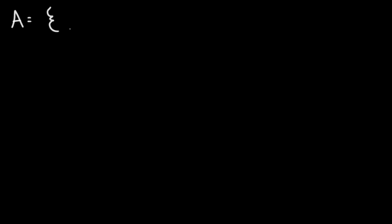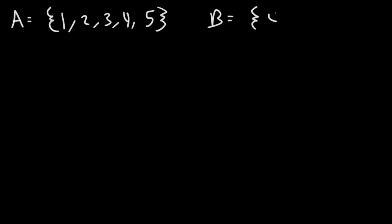Now let's use a simple example that will illustrate the use of Bayes' Theorem. Let's say that in a bottle there's a bunch of pieces of paper with numbers on it. Event A represents the following numbers being drawn: 1, 2, 3, 4, and 5. Now let's say event B represents the numbers 4, 5, 6, 7, 8, and 9.